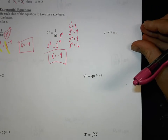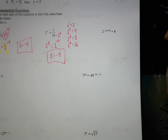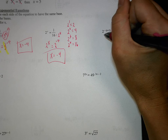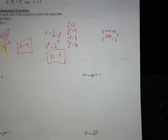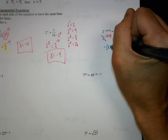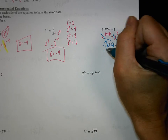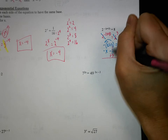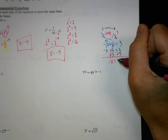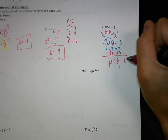This next one is slightly different because we have a negative x plus 3. Can we change 8 to be base 2? So 8 is going to be 2 to the 3rd power. Now if I drop these bases, we have negative x plus 3 equals 3. We distribute the negative through, and we get negative x minus 3 equals 3. Then we add 3 to both sides: negative x equals 6. So if negative x equals 6, positive x equals negative 6.